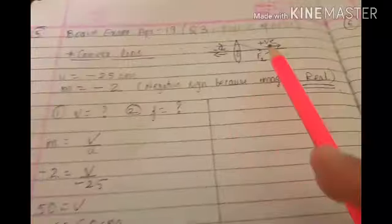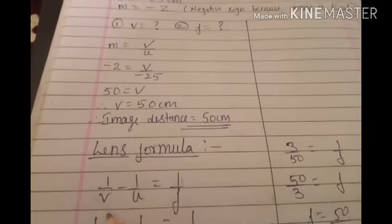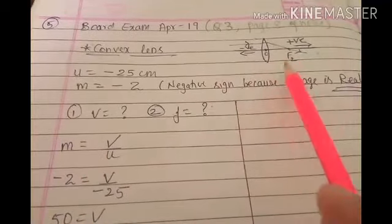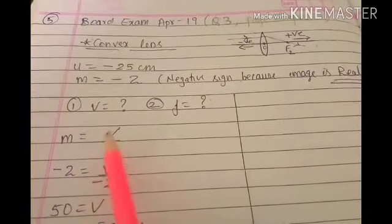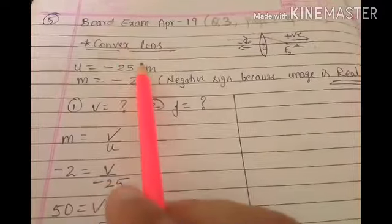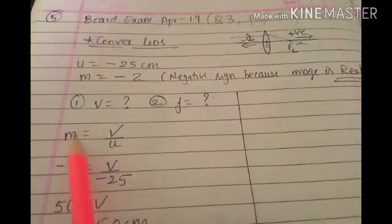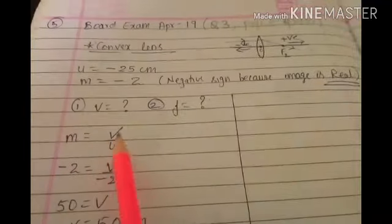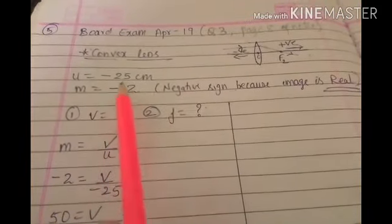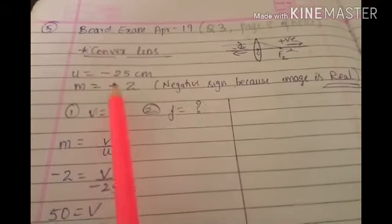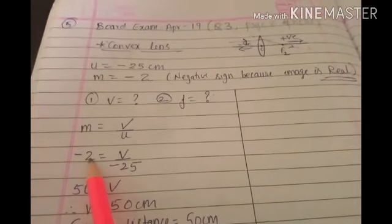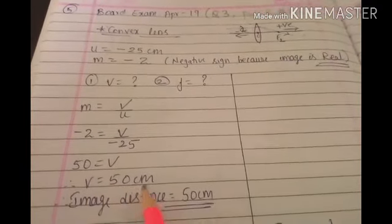From the given information, you find one of the things, either V or F. M equals minus 2. The formula for magnification produced by a lens is M = V/U (positive V/U for lens, unlike mirrors). So minus 2 = V/(-25), cross multiply, and you get V equals 50 cm.